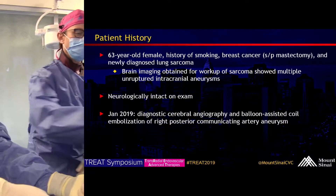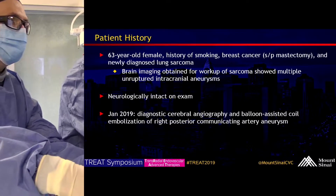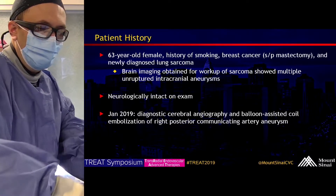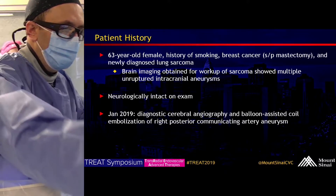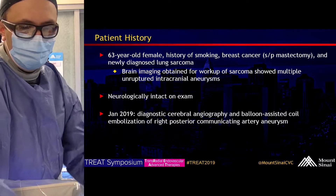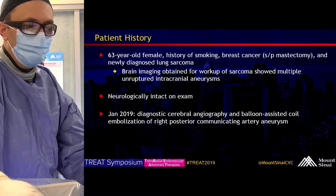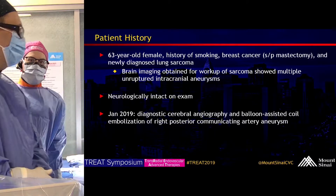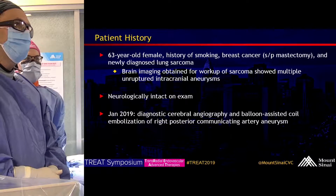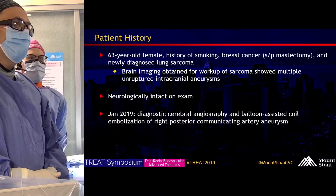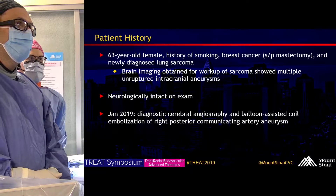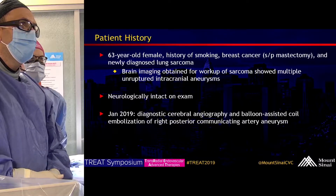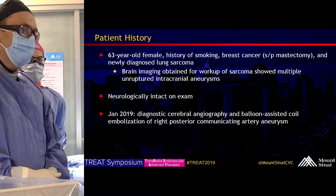There's a 63-year-old female with a history of smoking, breast cancer, and lung sarcoma. Based on the lung cancer workup, she got brain imaging — CT head with contrast — which showed multiple intracranial aneurysms. She was recently treated for one of these aneurysms, a right PCOM aneurysm — that's the coil mass we're looking at right now. We're bringing her back electively for two unruptured MCA aneurysms.